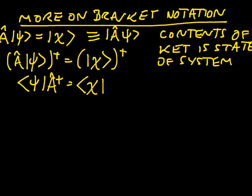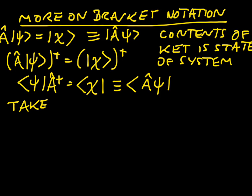Again, we might also have chosen, thinking about our label at the top of the ket as being A-psi inside it, to write this as bra of A acting on psi. In other words, bra-chi is the Hermitian conjugate of the state found by acting on psi with the operator A. If we want to take A outside, we can see from this that you have to put the Hermitian conjugate on. So if you take A outside the bra, you have to put on a Hermitian conjugate.